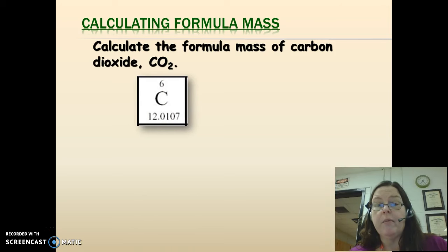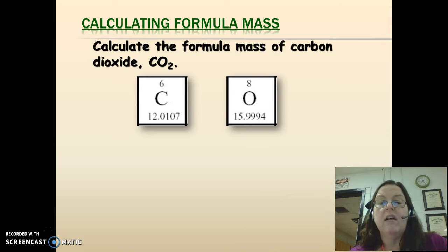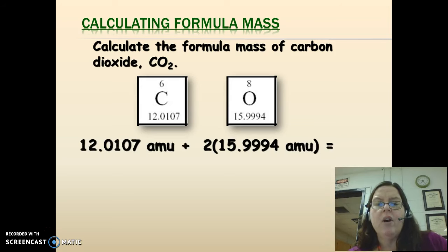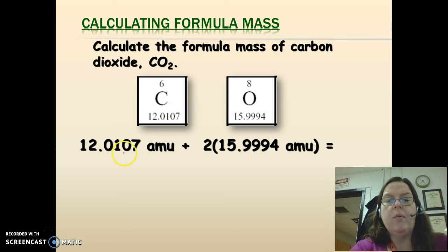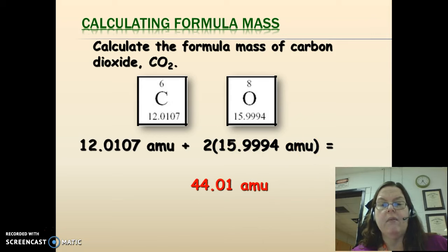The first thing that we need to know is that carbon from the periodic table has a mass of 12.01. Oxygen from the periodic table has a mass of 16. Just humor me here with this slide. That means I have one carbon at a mass of 12.0107, and I have two oxygens at a mass of 15.9994. If I do that and multiply that, I get 44.01. That's the mass or the formula mass of carbon dioxide. Pretty simple concept.